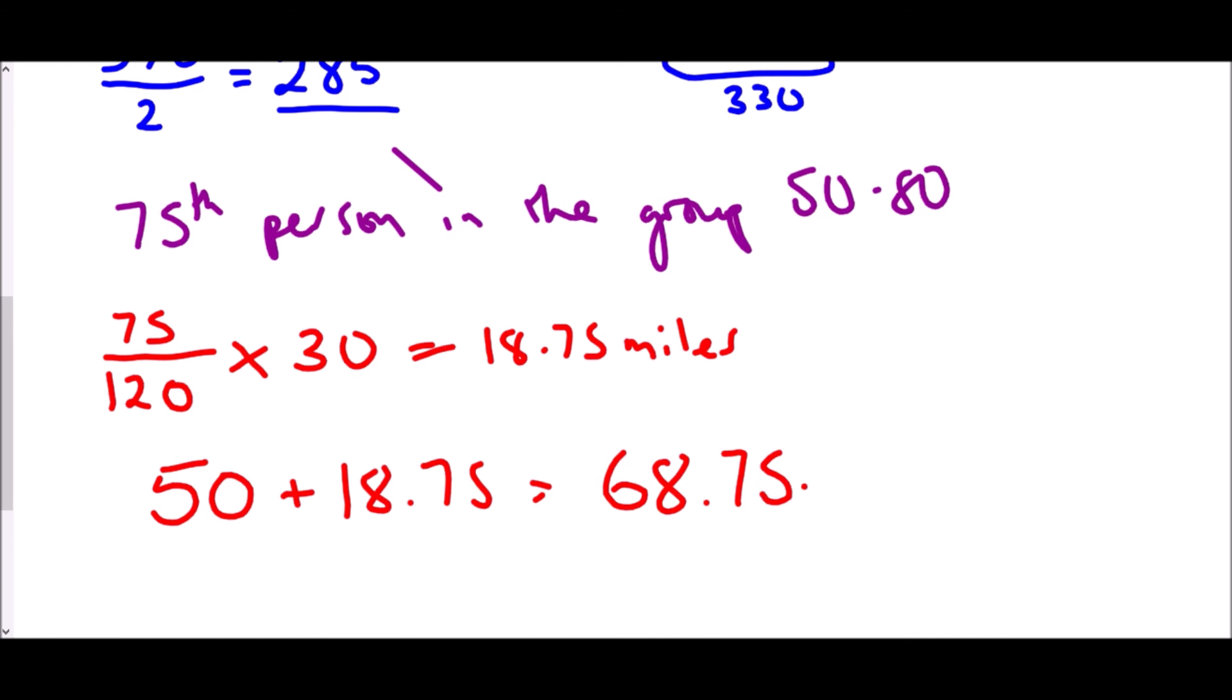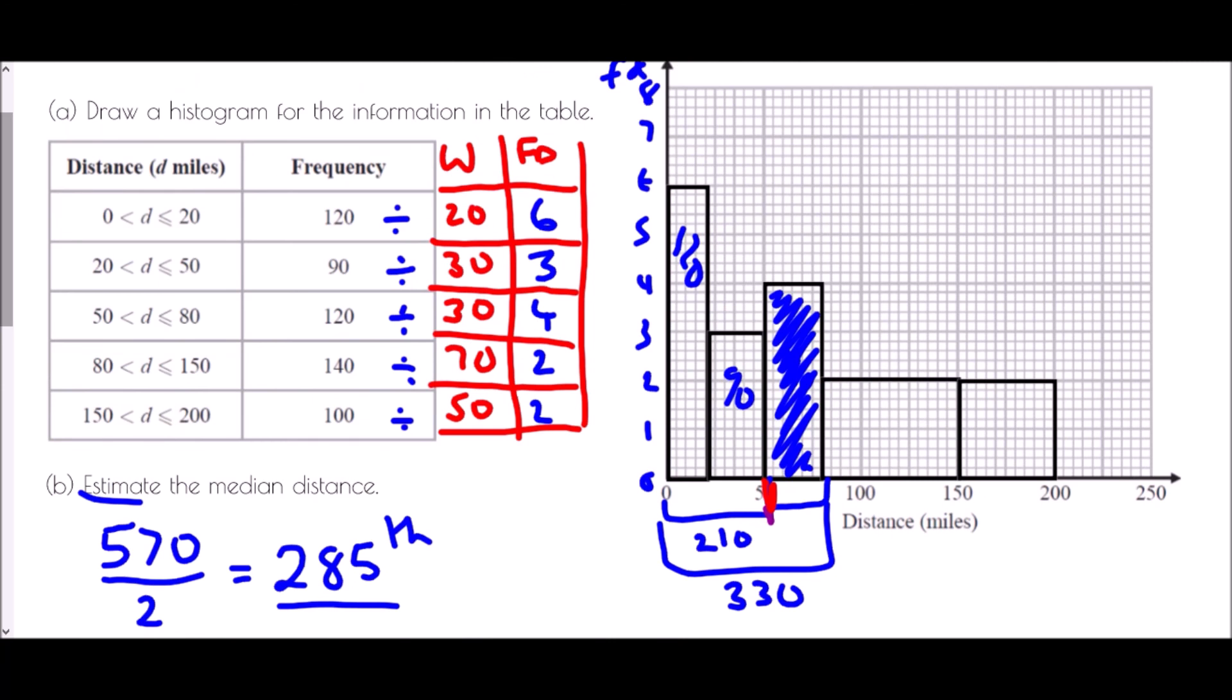And so my estimate would be 50 plus 18.75, I would estimate that the median was at 68.75 miles. We are dealing with proportions and again we're assuming that everybody was evenly distributed in each of the groups in order to find our median.